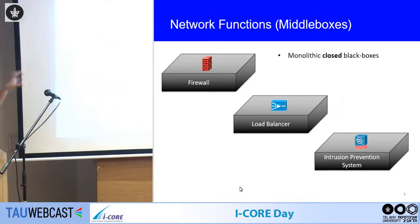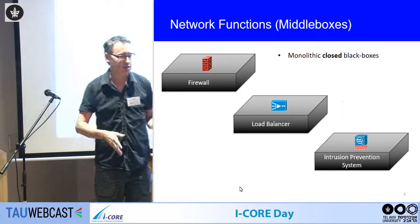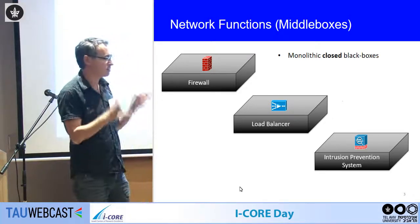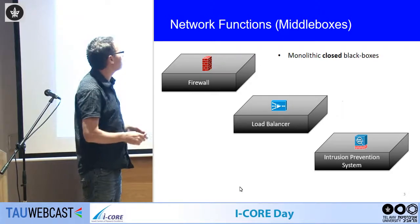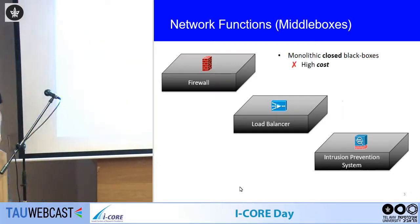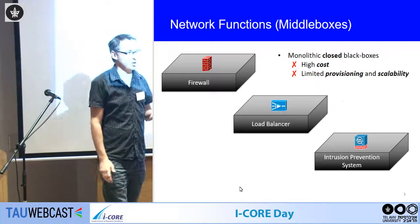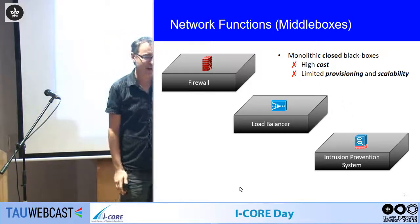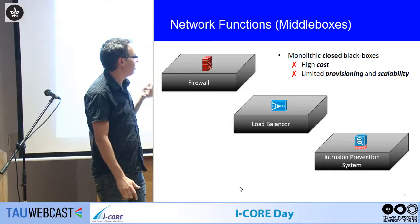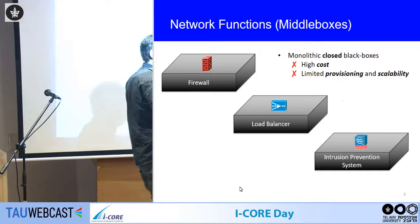Traditionally, these come as monolithic closed boxes — you go to Juniper or Checkpoint, buy this box, put it somewhere in the network, and it receives traffic, processes it, and outputs it. Nobody really knows what's inside. This traditional middlebox is a monolithic closed black box. It has high cost, limited provisioning, and limited scalability — for example, you buy a box for 10 Gbps, you need 20 Gbps, you have to buy another one.